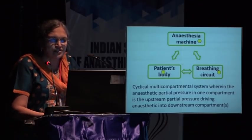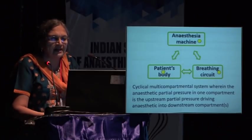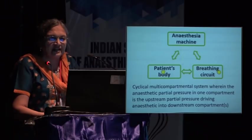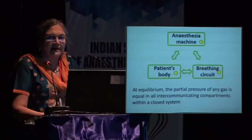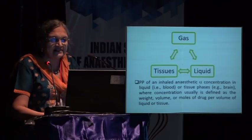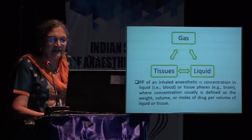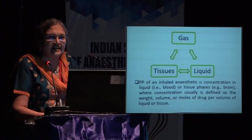When we work with the anesthesia machine, it is a cyclic multi-compartmental system. The anesthetic partial pressure in one compartment is upstream to the next: the anesthesia machine is upstream to the breathing circuit, the breathing circuit is upstream to the patient's body, and the patient's body becomes upstream to the anesthesia machine. At equilibrium, the partial pressure of any gas will be equal in all these interconnected compartments. This partial pressure is proportional to the concentration in blood or tissue phases.